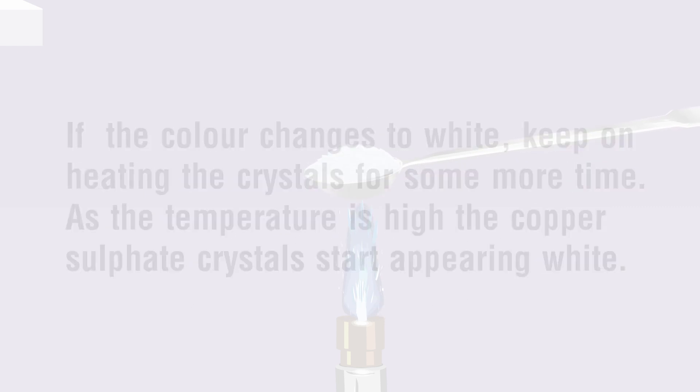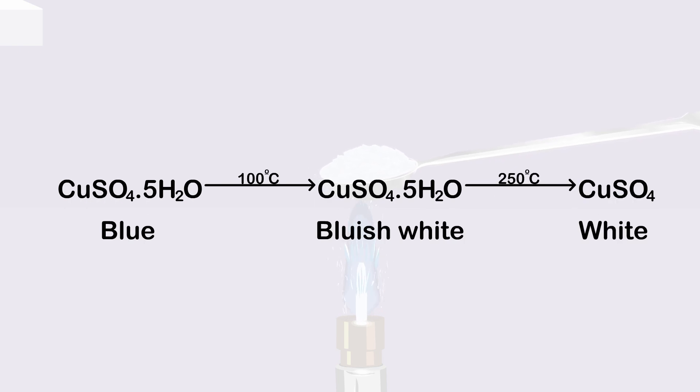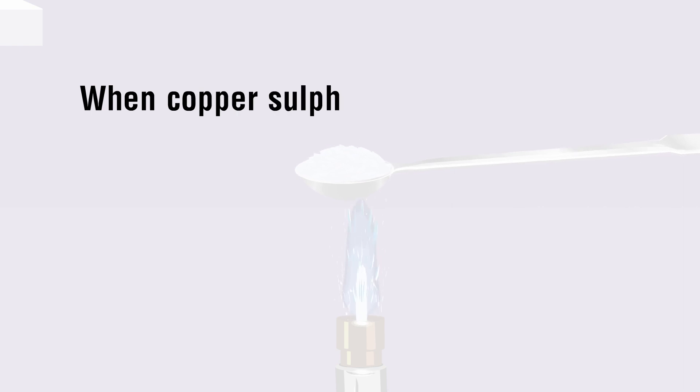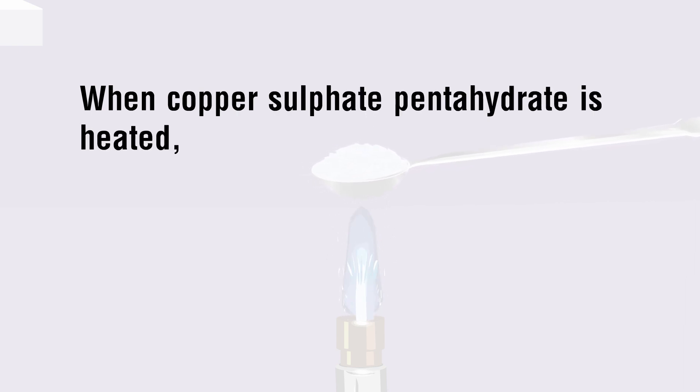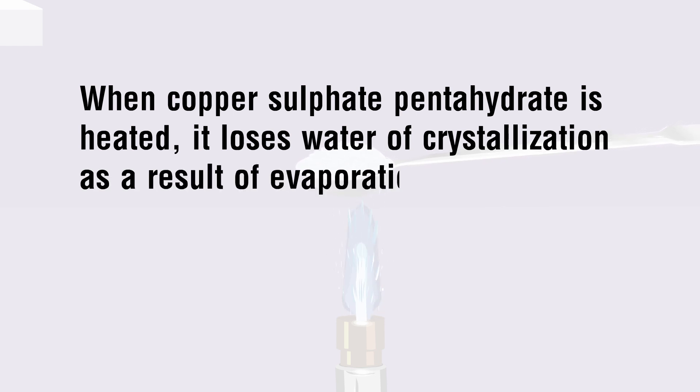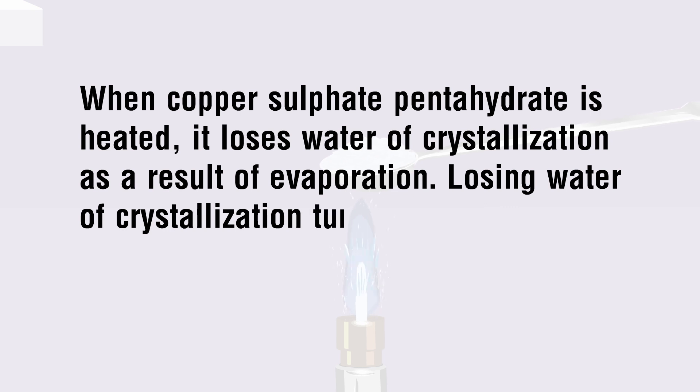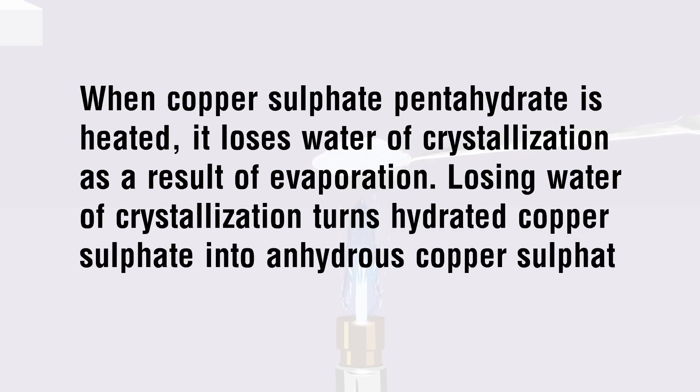When copper sulfate pentahydrate is heated, it loses water of crystallization as a result of evaporation. Losing water of crystallization turns hydrated copper sulfate into anhydrous copper sulfate salt.